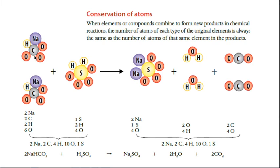You can count the atoms: two sodiums, two hydrogens, two carbons, and six oxygens from the two bicarbs, plus one sulfur, two hydrogens, and four oxygens from the sulfuric acid. On the right: two sodiums, one sulfur, four oxygens in sodium sulfate, two oxygens, four hydrogens in the two waters, and two carbons plus four oxygens in the carbon dioxides. Adding them all up: two sodiums, two carbons, four hydrogens, ten oxygens, one sulfur on the left — and exactly the same on the right. So the equation is balanced.